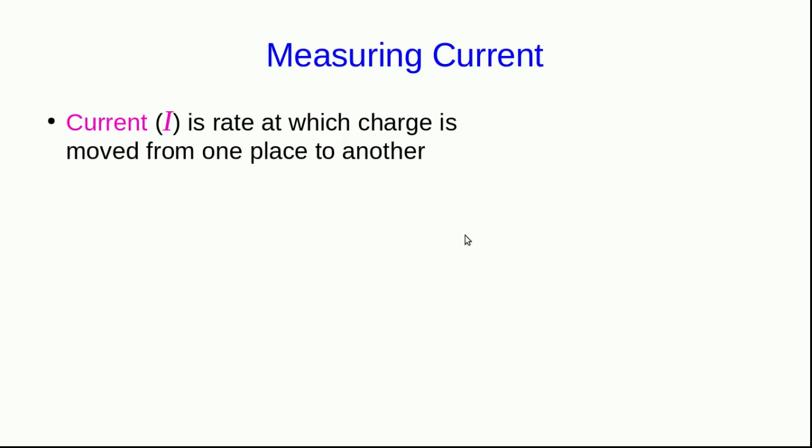I'm going to be talking a lot about current as a quantity which is presumably measurable, but I've never explained how we actually do measure current, and there's a good reason for that which you'll see in a moment. Current is a rate at which charge is moved from one place to another. How would we measure that using physics that we already know?